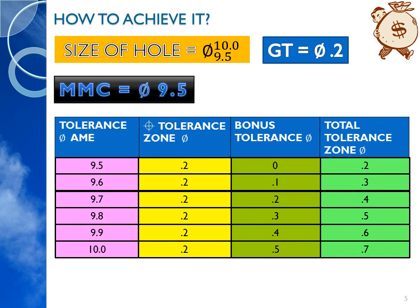We can observe from this table that when your actual mating envelope departs from maximum material condition towards least material condition, the bonus tolerance increases.